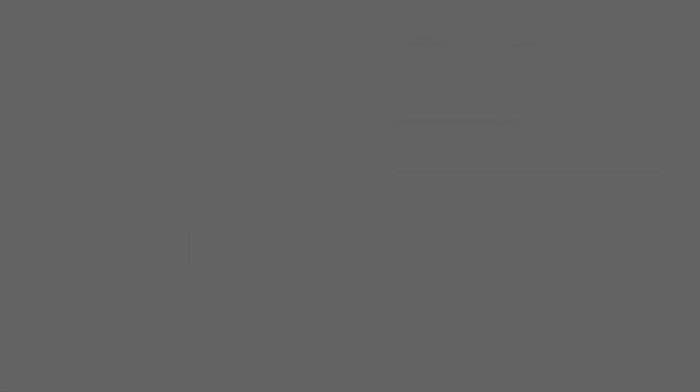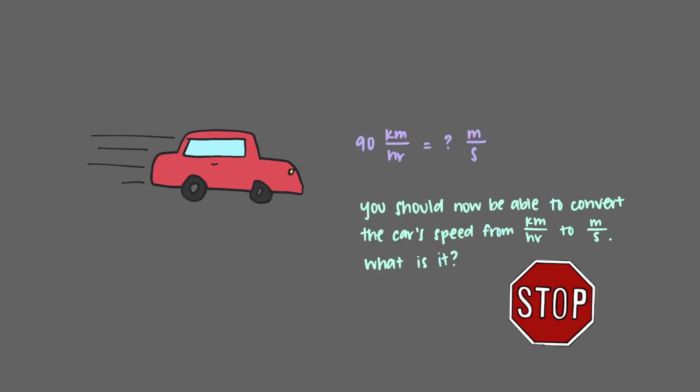In the beginning of the video, we mentioned a car traveling at a constant speed of 90 kilometers per hour. You should now be able to convert the car's speed from kilometers per hour to meters per second. What is it?